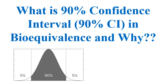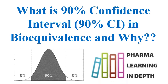Many times we come across the terminology of 90% CI value. What is 90% CI value? That is confidence interval in bioequivalence, and why is it 90%? We come to know about 90% CI, that is confidence interval, but we don't know why it is 90% and not other values. So I welcome you to this video where we will find out the answers to these questions.